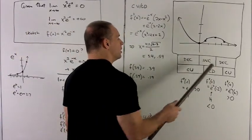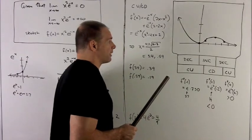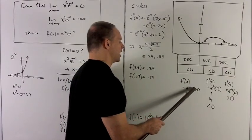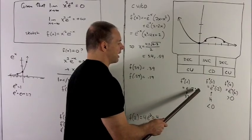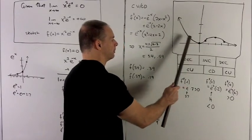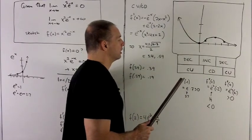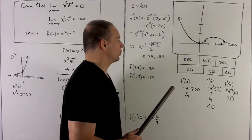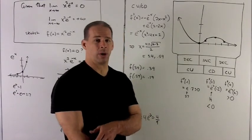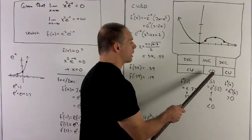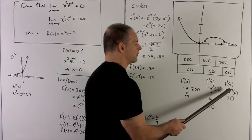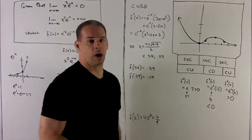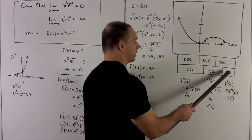Checking concavity in each region: f''(-1) = e·7 ≈ positive, so concave up on (-∞, 0.59). f''(2) = e^(-2)·(-2), which is negative, so concave down on (0.59, 3.4). f''(4) = e^(-4)·2 ≈ 2/81, which is positive, so concave up on (3.4, ∞).